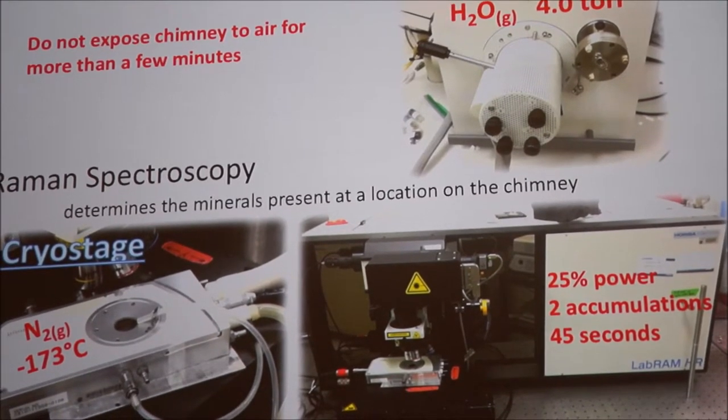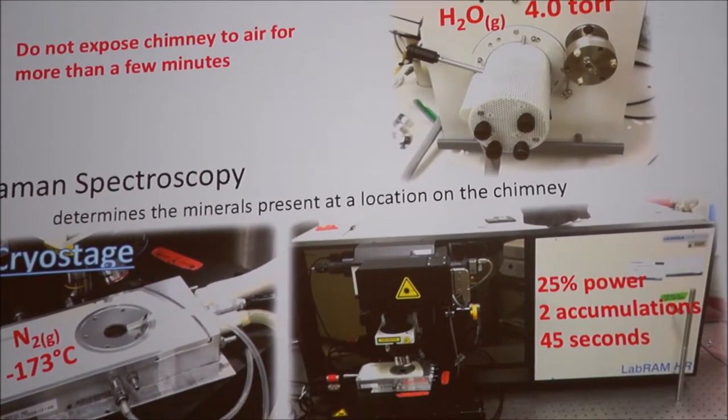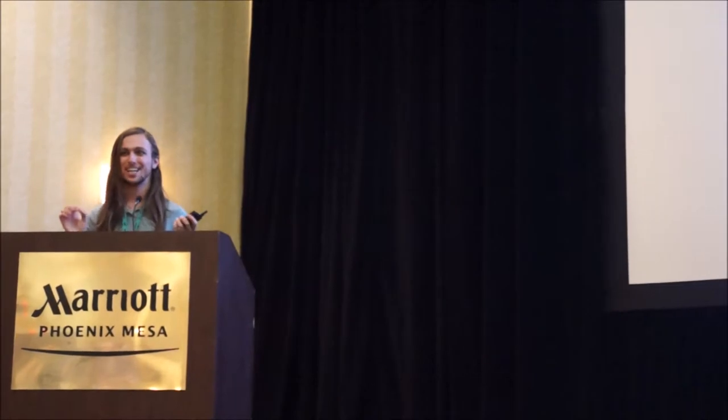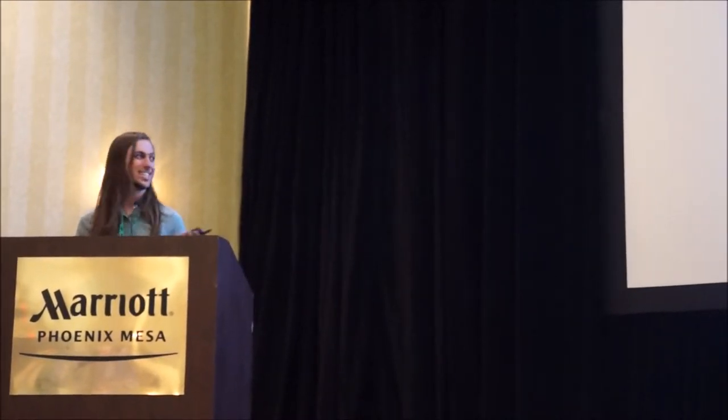For Raman spectroscopy things were a little bit more difficult because it turns out that the Raman beam can melt the minerals within the chimney and oxidize them forming hematite. In order to get around that we had to use the spectrometer at 25% power and also use this thing called a cryo stage, which basically just holds the piece of chimney at a really low temperature under nitrogen atmosphere so that the energy from the beam goes into heating up the nitrogen molecules instead of making our minerals turn to hematite.